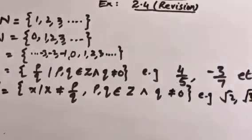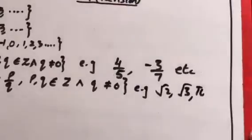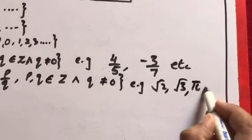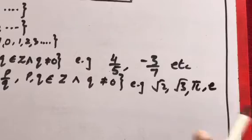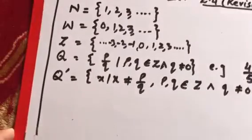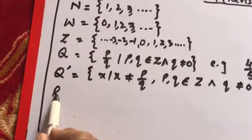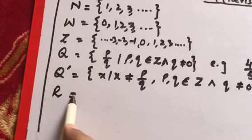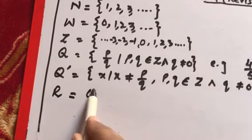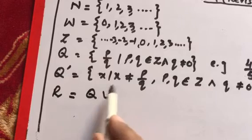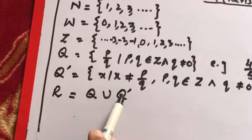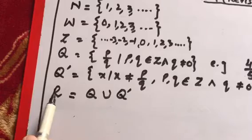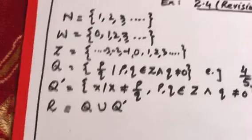After that we revised the real numbers, represented by R. The union of rational and irrational numbers is called the real numbers.